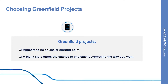When starting a DevOps transformation, you might need to choose between Greenfield and Brownfield projects. A Greenfield project will always appear to be an easier starting point because a blank slate offers the chance to implement everything the way you want. You might also have a better chance of avoiding existing business processes that do not align with your plans. For example, if current IT policies do not allow cloud-based infrastructure, this might be allowed for entirely new applications designed for that environment from scratch. As another example, you might be able to sidestep internal political issues that are well-entrenched.